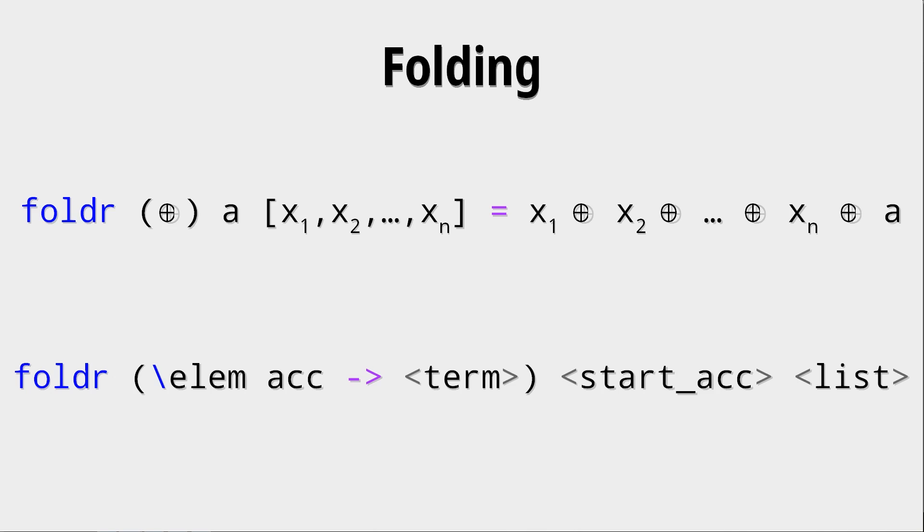gets one element from the list and after that the accumulator and that, of course, has to result in a term or expression that returns the type of the accumulator again. Then you get some starting accumulator, whatever that might be, and after that the list.